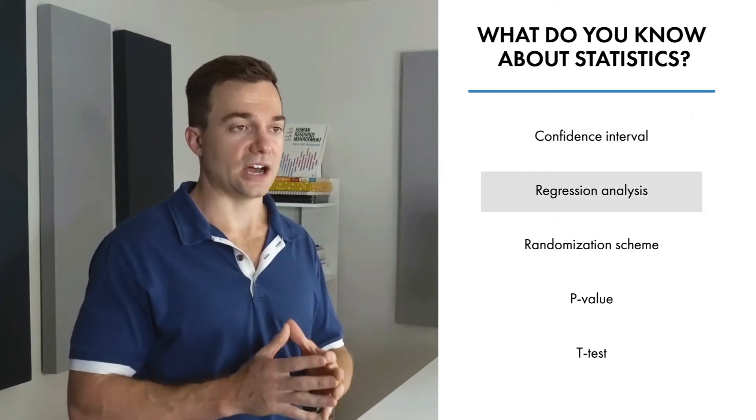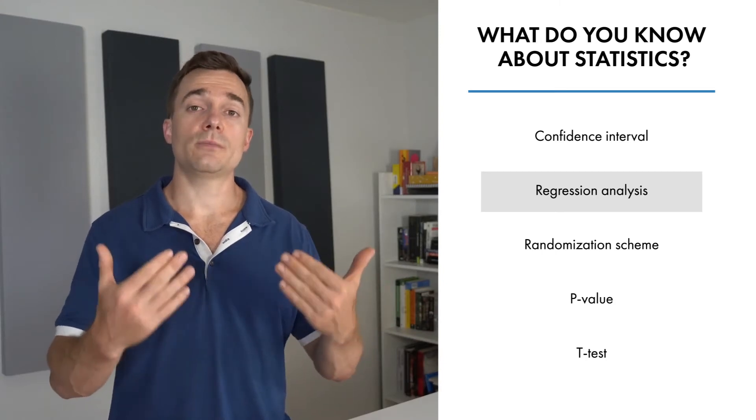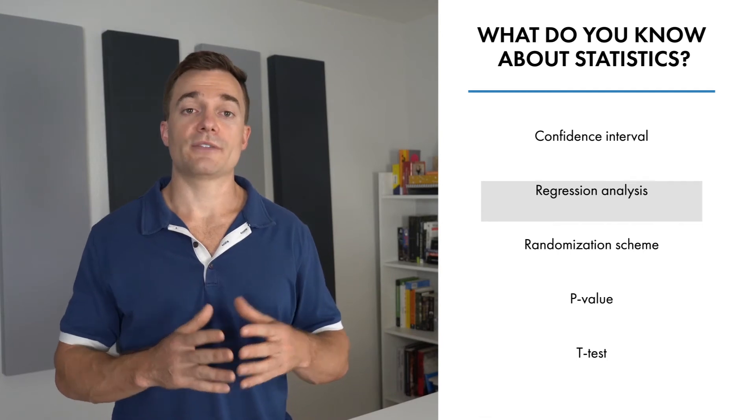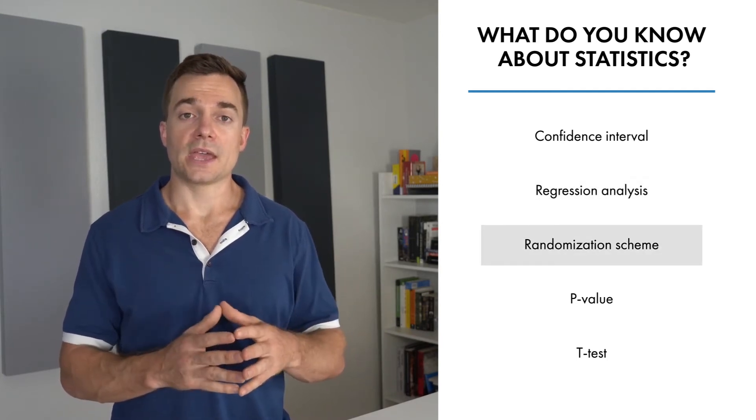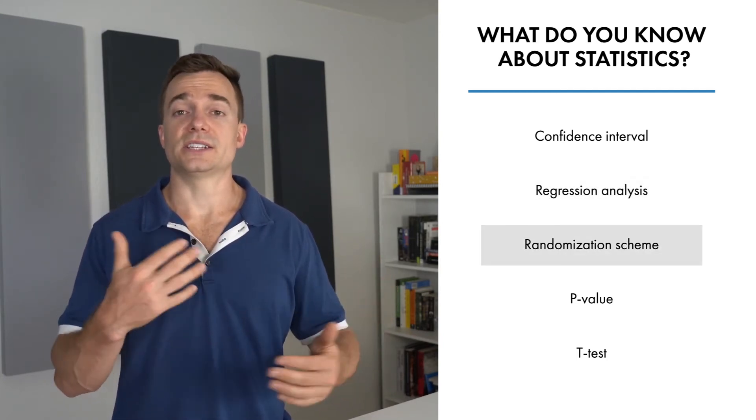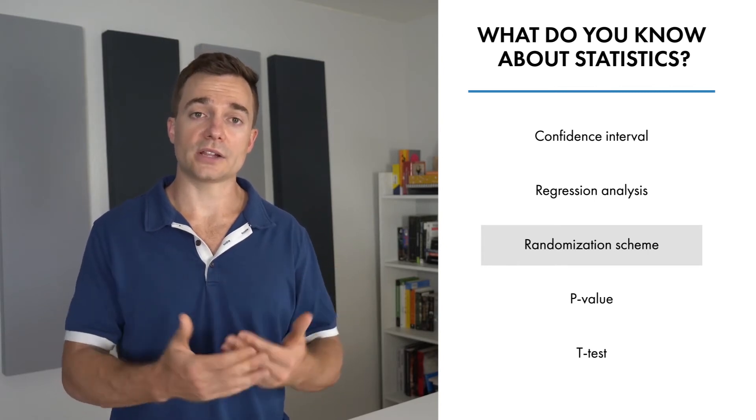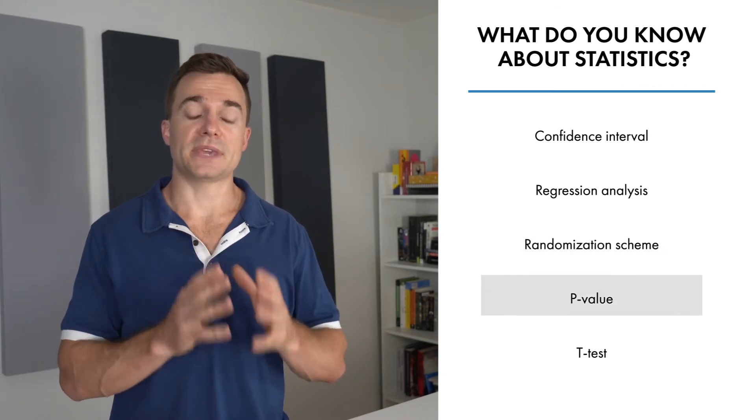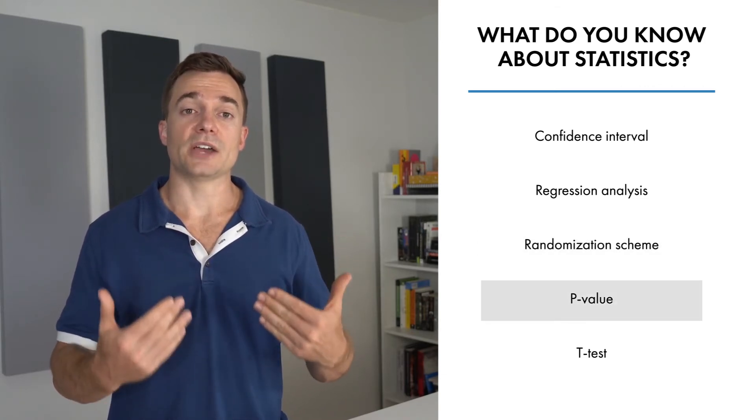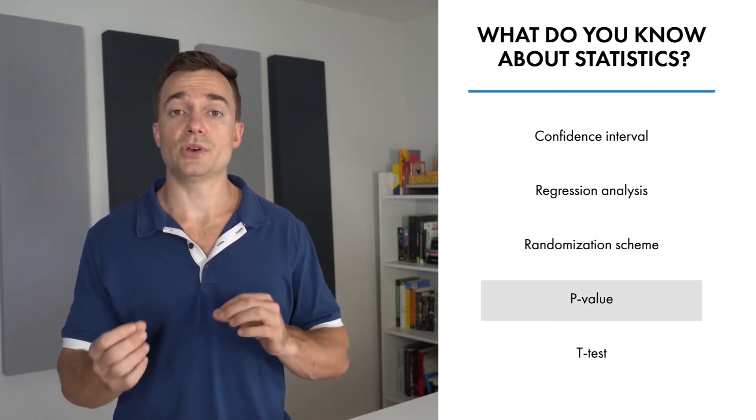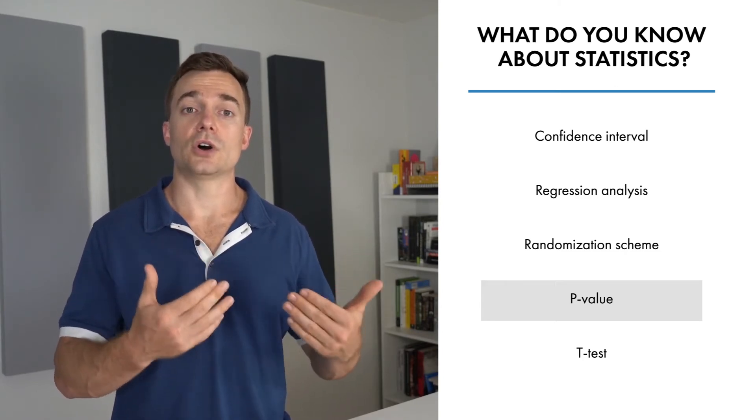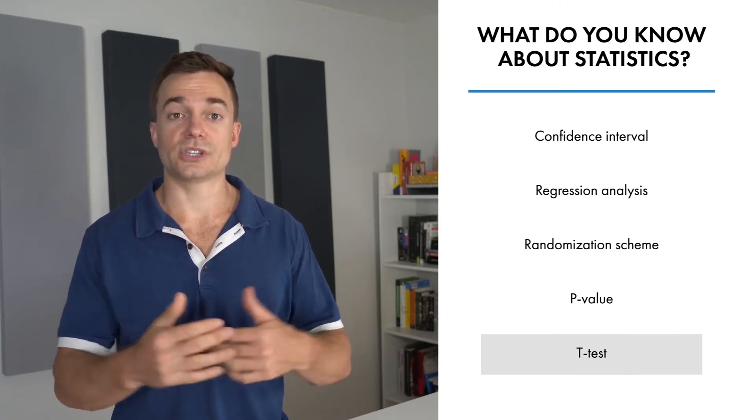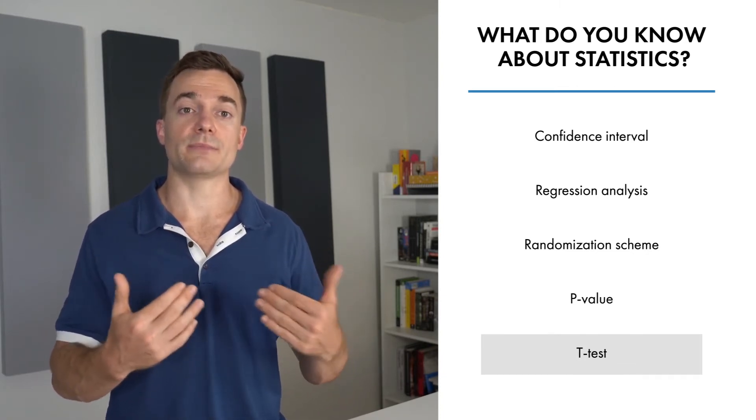We have regression analysis, which is a statistical method that allows you to examine the relationship between two or more variables of interest. We have randomization scheme, a process which each participant in a study or trial has an equal likelihood of being assigned to treatment versus referent groups. We have the p-value, which measures the probability of obtaining the observed results, assuming that the null hypothesis is true. And we have the t-test, a statistical test used to compare the means of two groups.